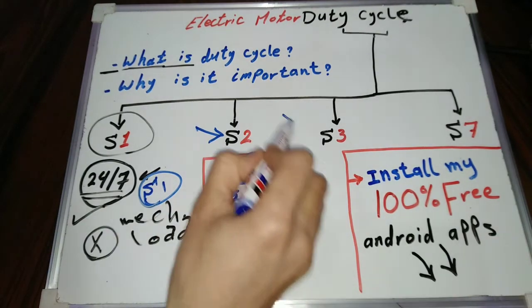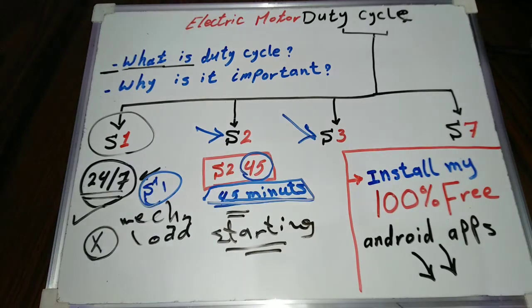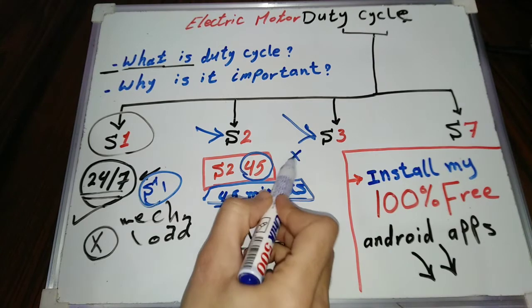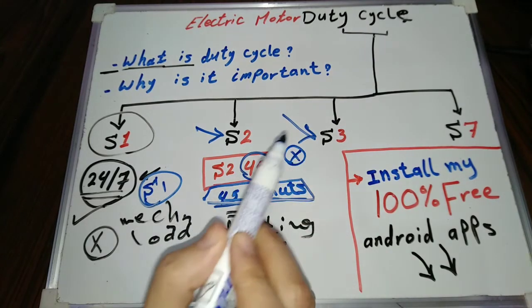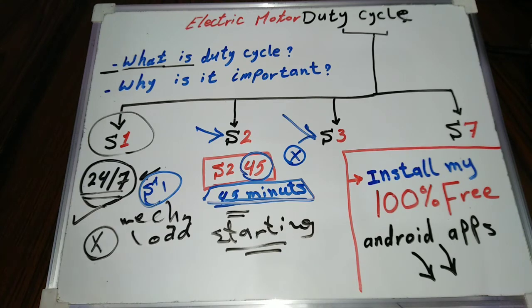Intermittent duty, S3, this cycle contains rest time and constant loads. The motor temperature and the rest time doesn't reach the ambient temperature. An example of this type of duty cycle is conveyors of constant loads and constant periods of working time.